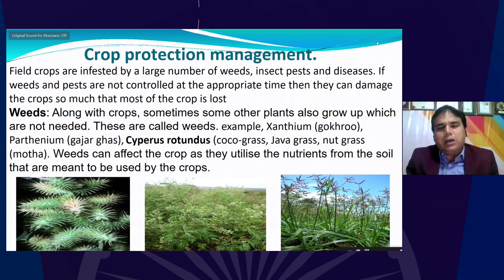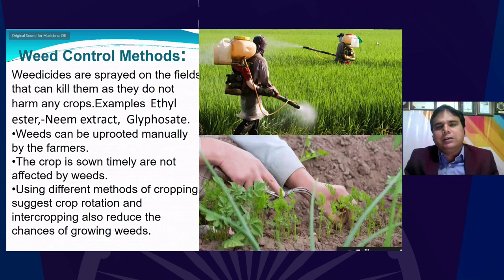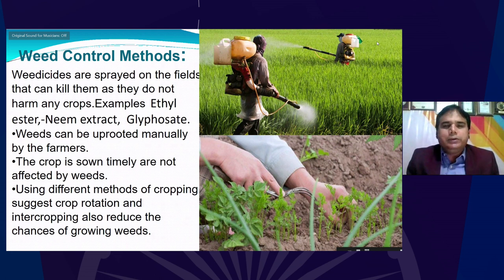These weeds affect the crop because they utilize the nutrients from the soil that are meant to be used by the crop. That is why there is a need to control these weeds. The first question from the students is: what is Congress grass and how did it come to India?